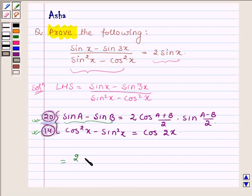So 2 cos A plus B, A is x and B is 3x, so we have 4x upon 2 into sin A minus B. So A is x and B is 3x, so x minus 3x is minus 2x upon 2.